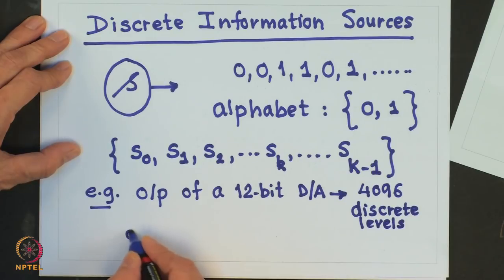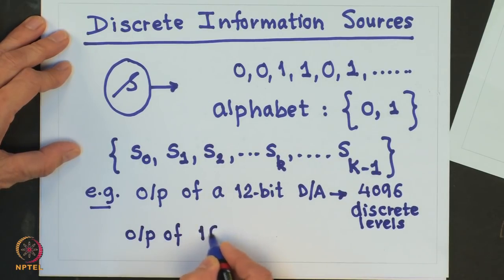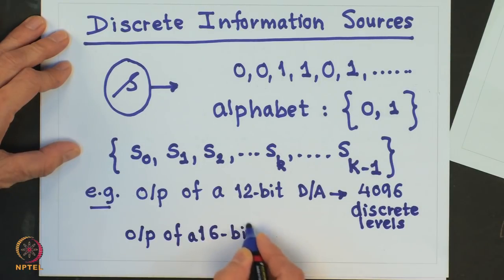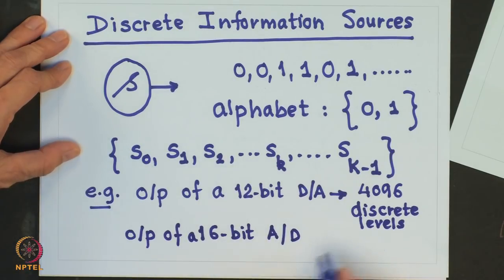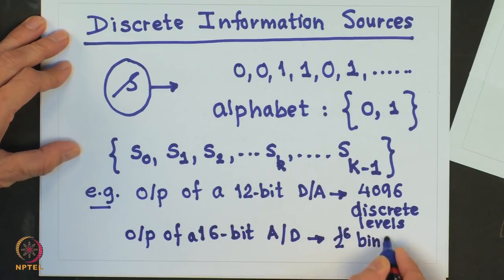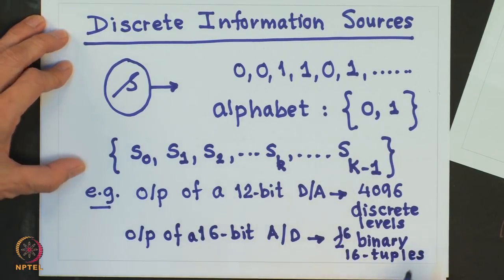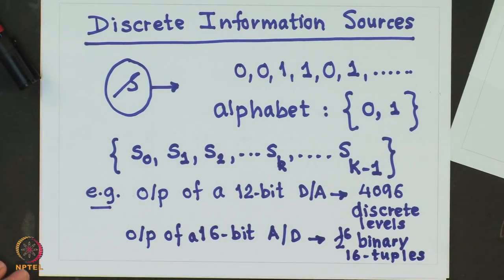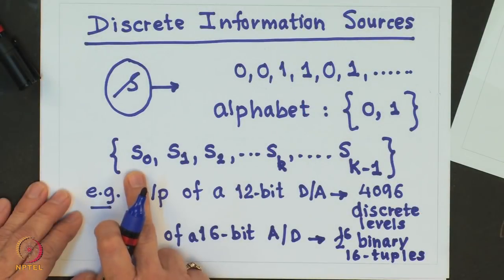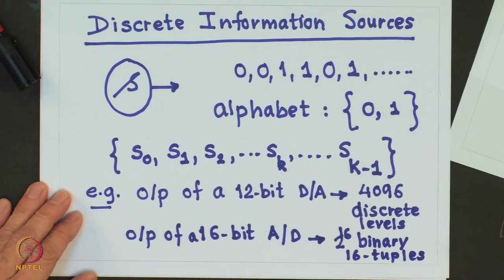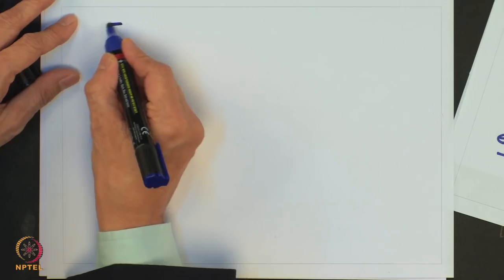Another example is the output of a 16-bit A-to-D converter, whose output is one of 2^16 binary 16-tuples. To construct a mathematical model for a finite discrete source, we assume that each letter in the alphabet — s_0, s_1, s_2, up to s_{K-1} — has a given probability p_k of occurrence.